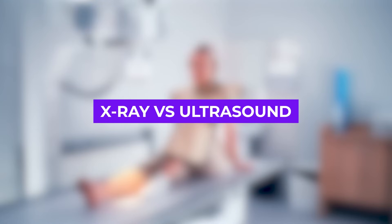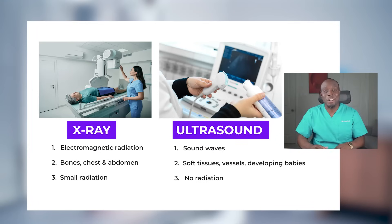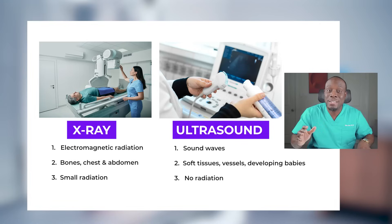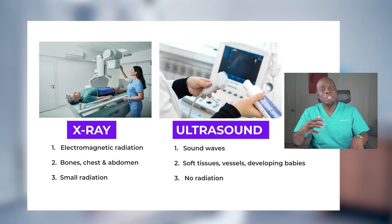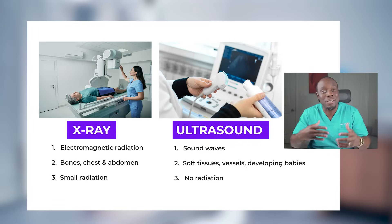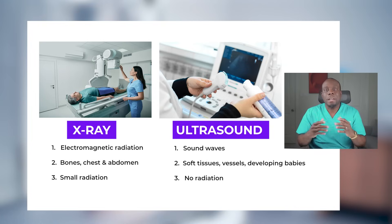So what are the main differences between X-rays and ultrasounds? The most obvious one is the technology itself: X-rays use electromagnetic radiation — a special penetrating light — while ultrasound uses sound waves. This leads to different applications: X-rays are great at viewing bones and certain diseases within the chest and abdomen, whereas ultrasounds excel in evaluating soft tissues, blood vessels, and developing babies during pregnancy.